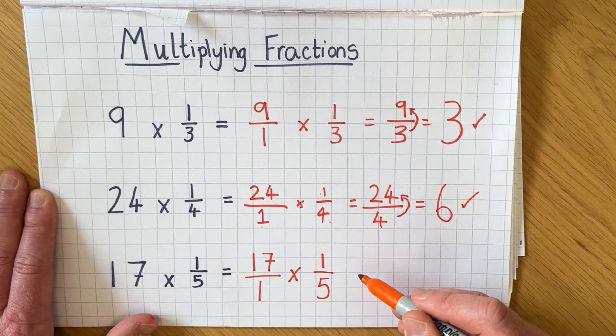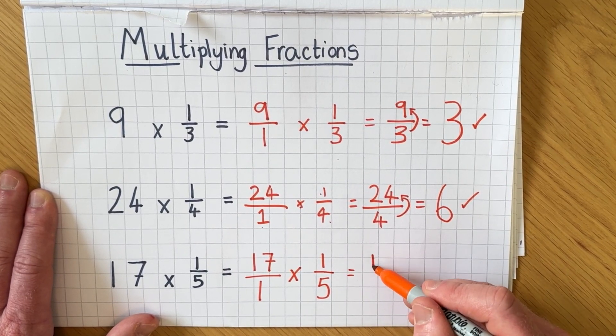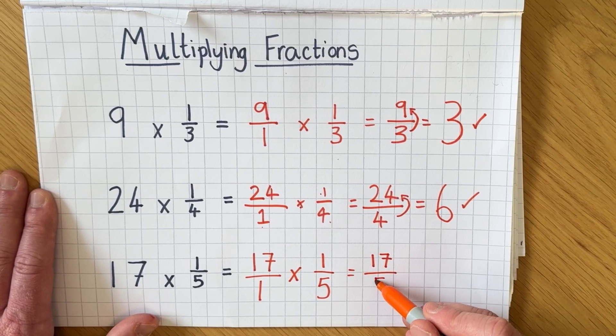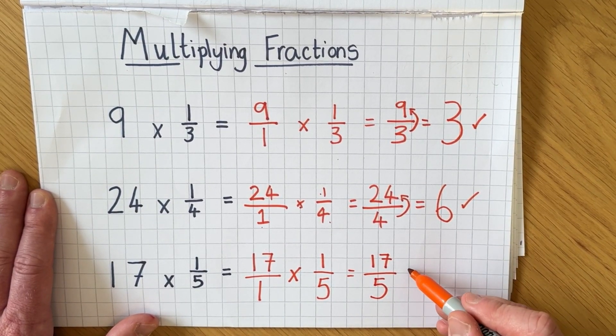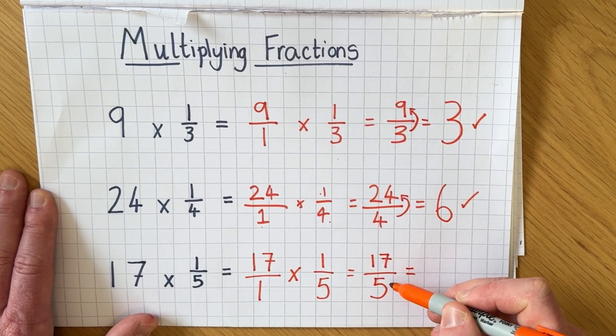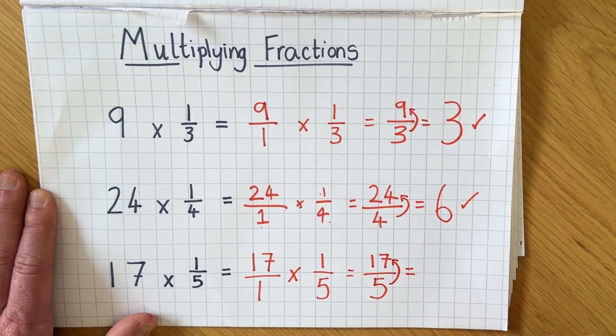17 times by 1 equals 17 and then 1 times 5 is 5 and then if I want to convert that into a mixed number I say how many fives in 17.